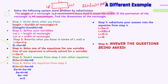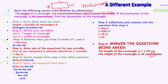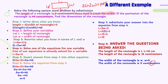Step eight: answer the questions being asked. The length of the rectangle is L, and L is 18 centimeters. Remember, you have to include units when the problem gives you units — I'm a science teacher too, so when it gives you units, you need to give units in your answer. The width of the rectangle is W, and W equals 5, so the width of the rectangle is 5 centimeters.